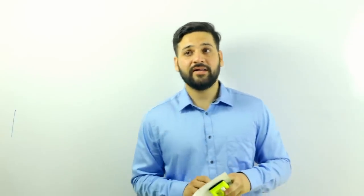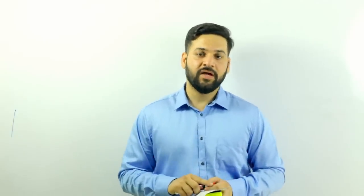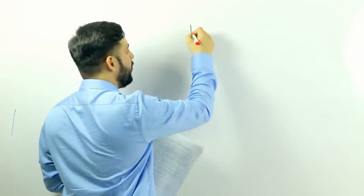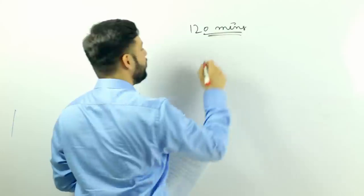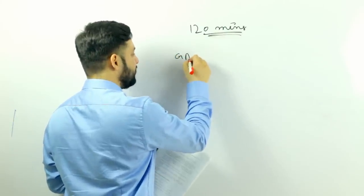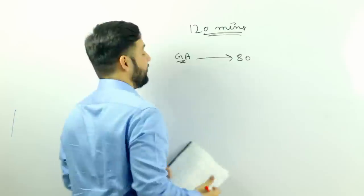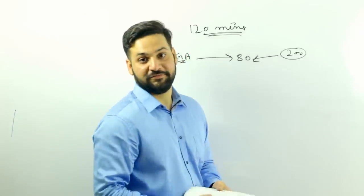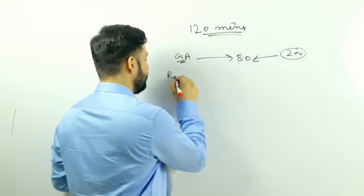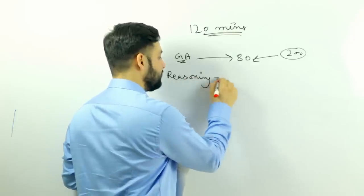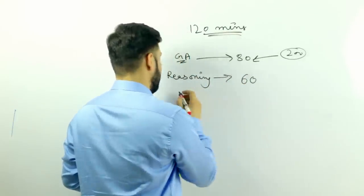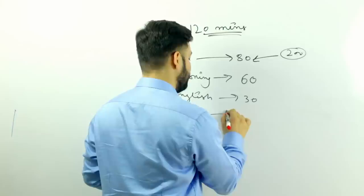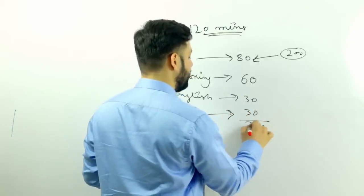In the phase 1 exam there are 2 hours, 120 minutes. The most important part is general awareness - there are 80 marks for general awareness out of 200. 60 are allotted to reasoning, and then English and QT quantitative aptitude 30-30 each are allotted to them. So there are 200 marks.